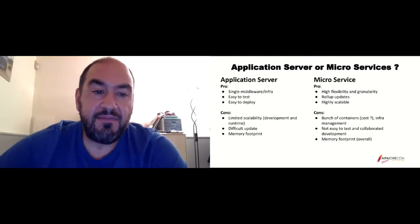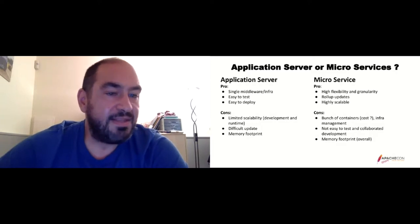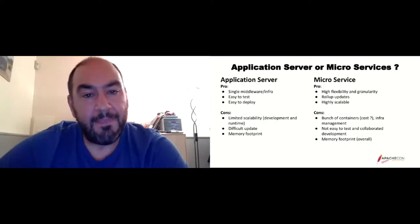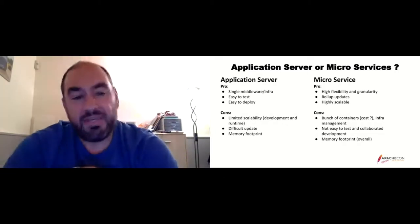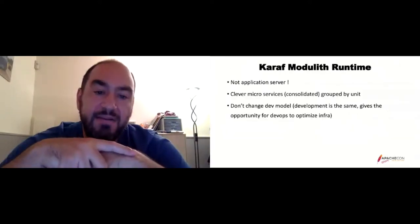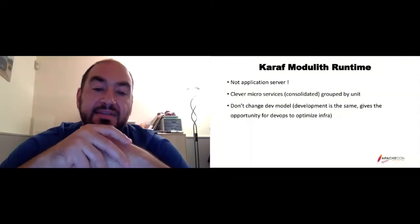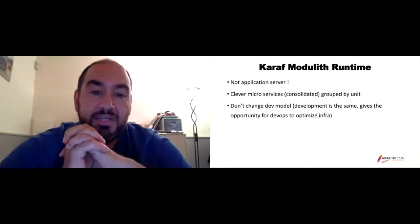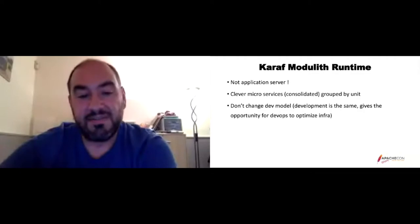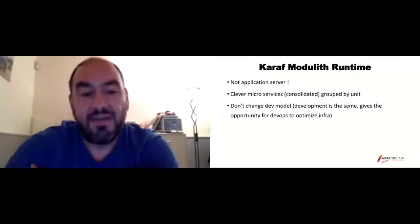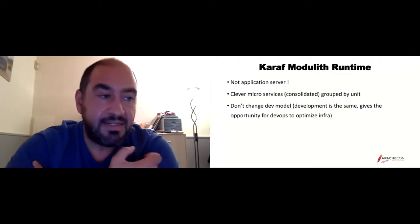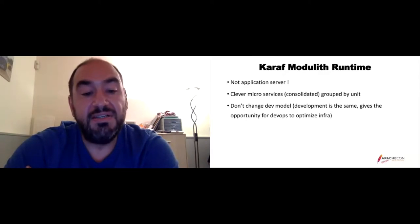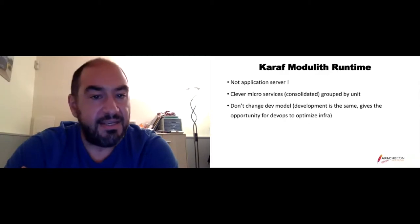I think application server and monolith are done and we should not do that. But maybe we have to think about microservices in a more clever way. That's what I call the Modolith. The Modolith is not an application server, but instead of deploying single atomic microservices, you can group and consolidate your microservices in a more efficient way. The grouping depends on your application and infra — you can start from the microservices approach and say these two services are tightly coupled and consolidate them. You can still update each component, keeping the same dev model while giving DevOps the opportunity to optimize the infra. That's exactly where Karaf is going.